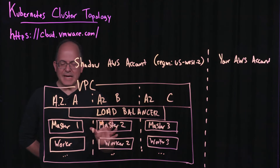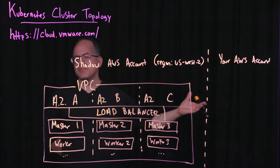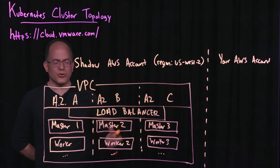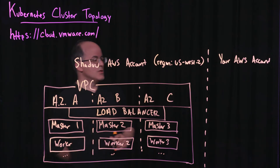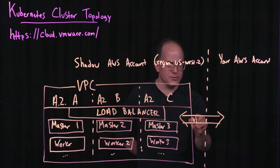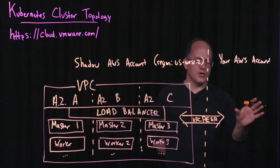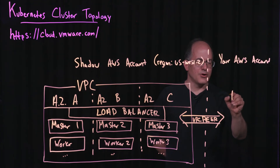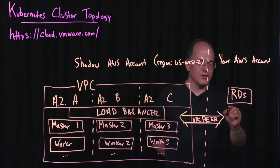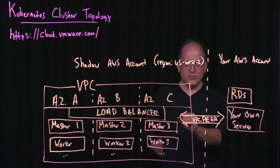One of the questions that people always ask is: if you're managing this, how do I get access to my services running in Amazon? Perhaps you're running your own services in your own AWS account, or perhaps you have access to other AWS services like RDS. So we allow you to set up what's called a VPC peer to your account. This allows you to share network traffic from your Kubernetes cluster in the shadow AWS account and share that traffic within your AWS account, so your cluster is able to access those services through the VPC peer.